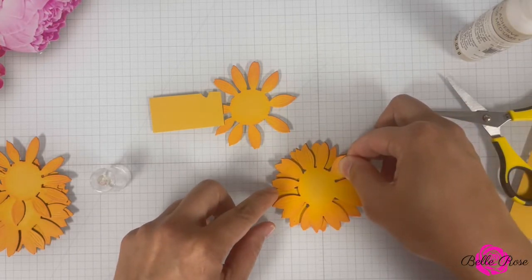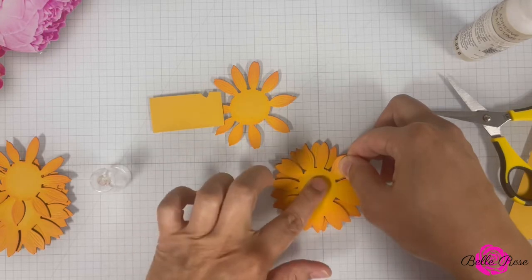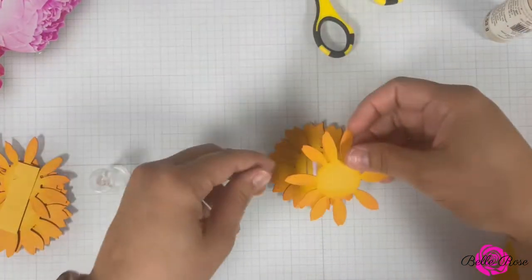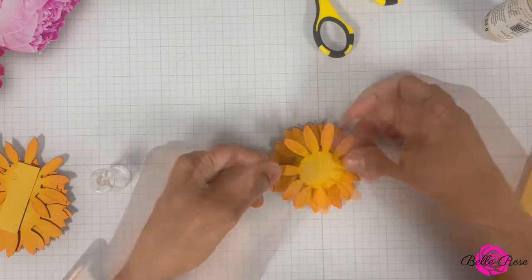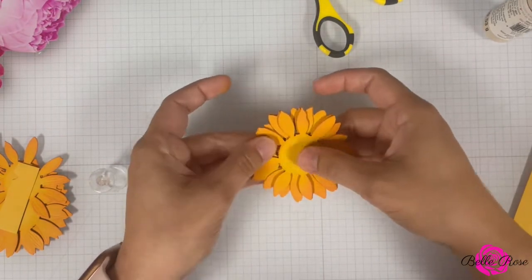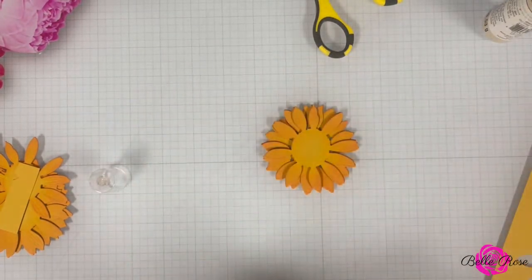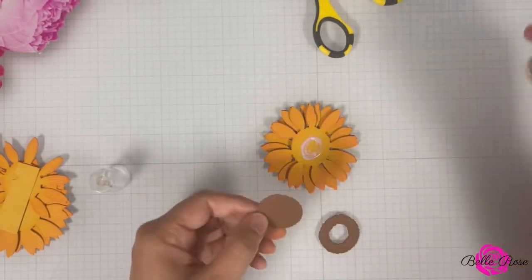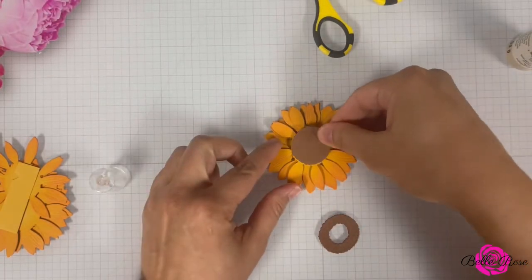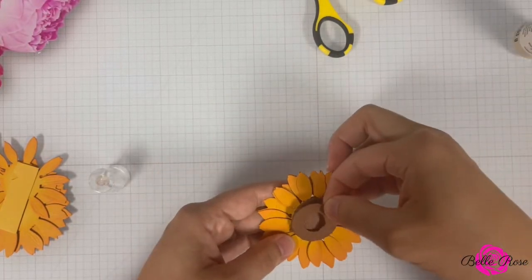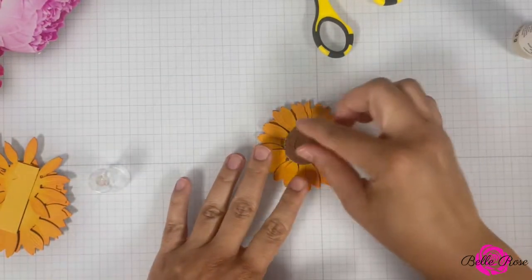Now this step is optional. You can opt to not add dimension and just adhere the layers together. Or if you don't want to use these strips of cardstock, then you can feel free to use foam tape, whichever you prefer. Finally, I'm going to adhere the center of the sunflower, and then from there it is on to the next step.